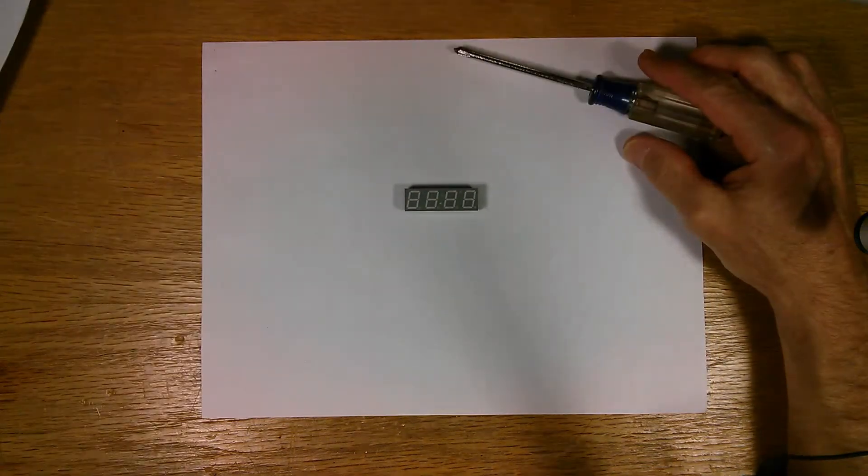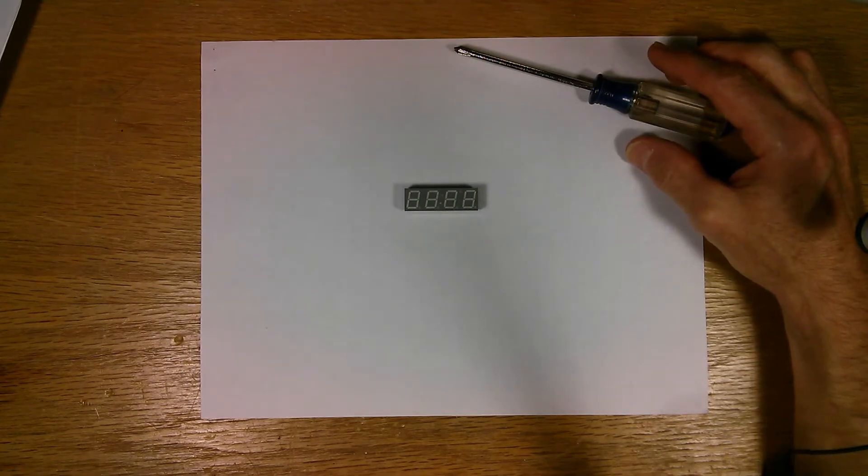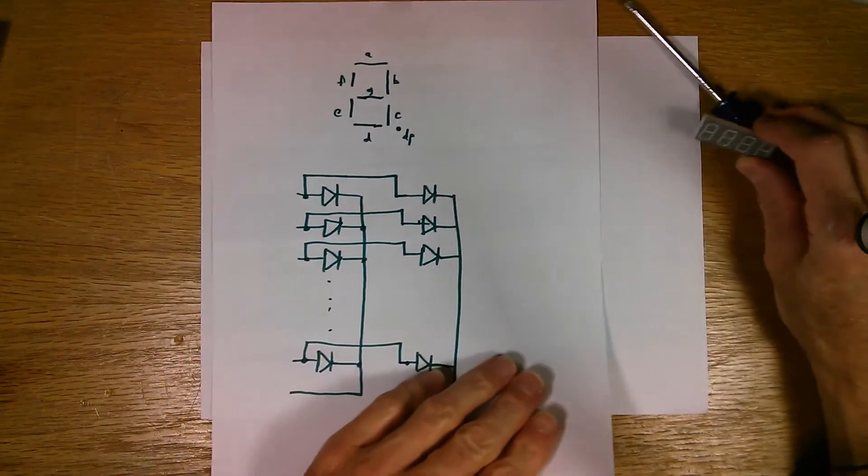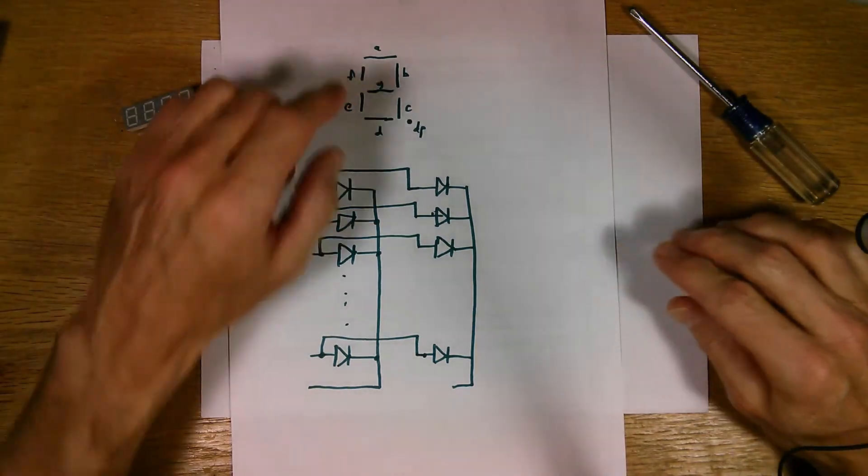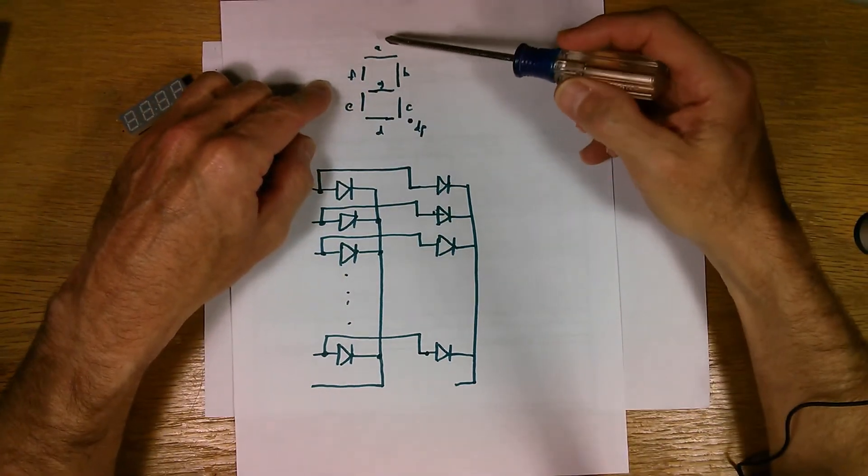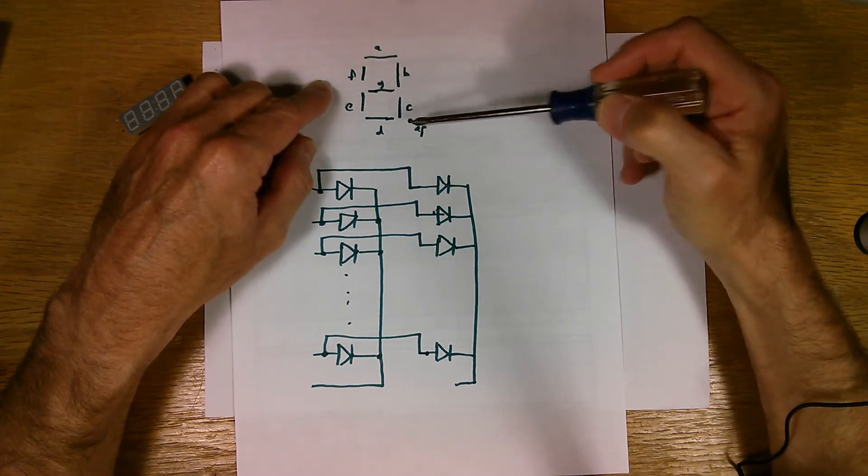Well, let's have a look here. Somewhere I've got a drawing for that. Yes, here it is. So here are the segments again. And they're numbered this way or lettered. A, B, C, D, E, F, and G, and then the decimal point.